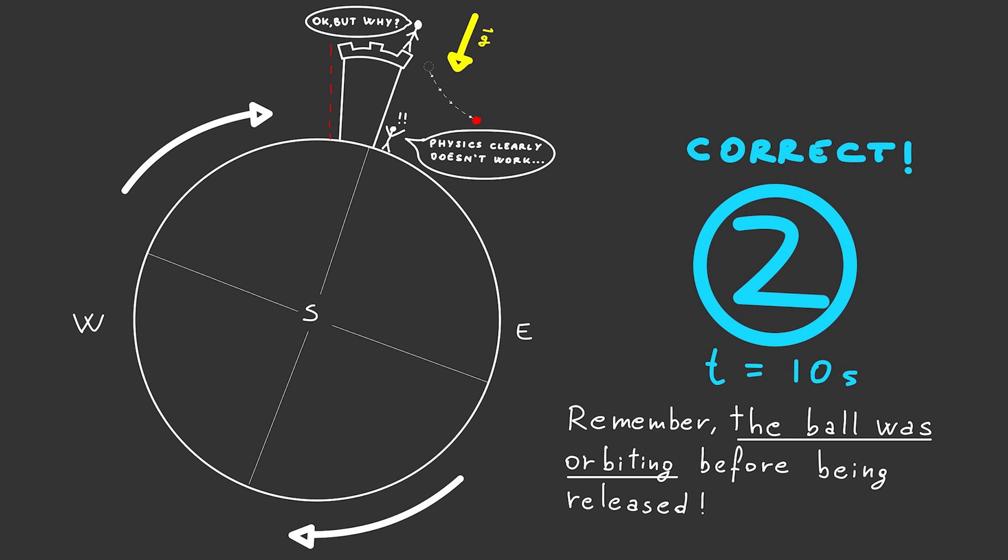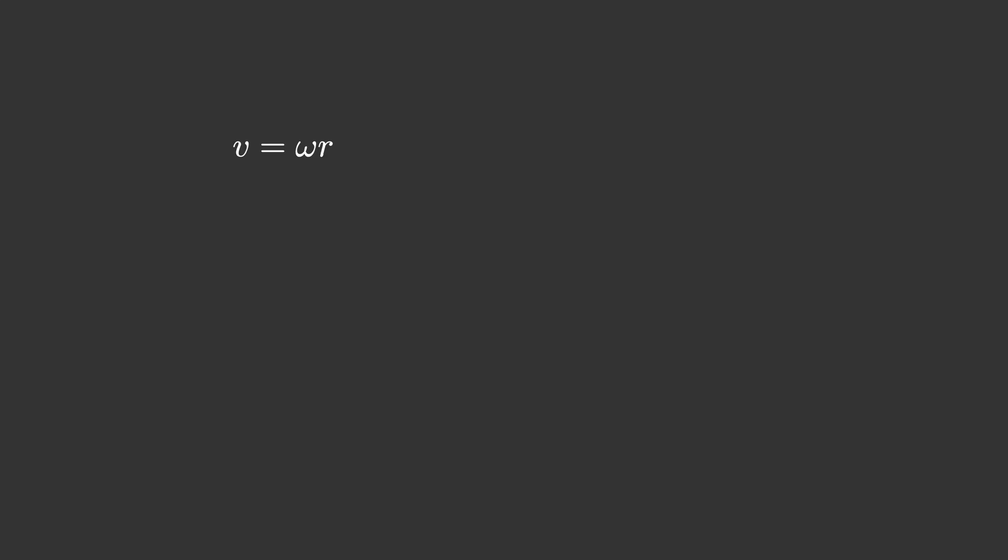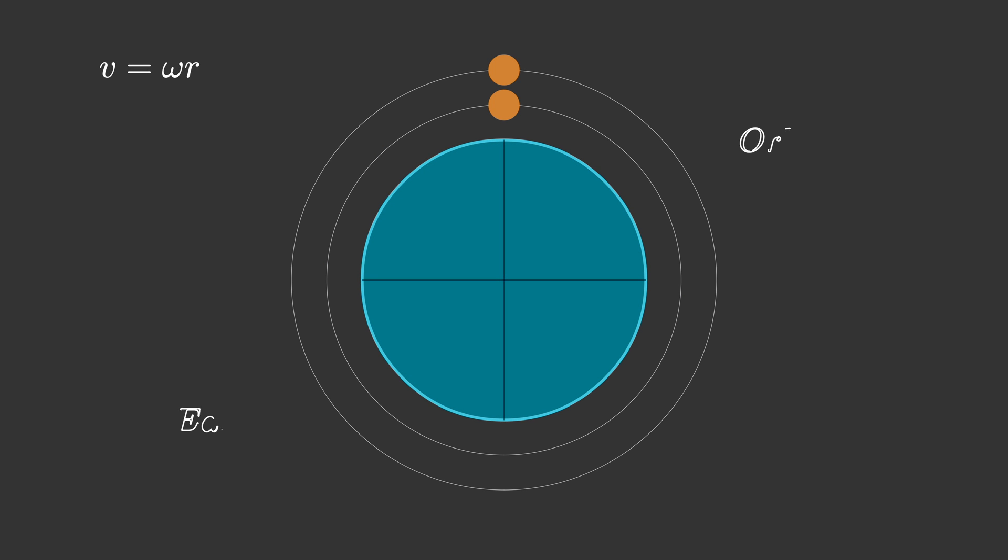Let's take the equation describing the tangential velocity of an orbiting object around a fixed point. Clearly, the speed of the object is proportional to the angular frequency, that is, the number of rotations per unit of time. If two objects orbit at different heights at the same angular frequency, the one further away must be moving at a higher speed, because it has to travel along a longer path.